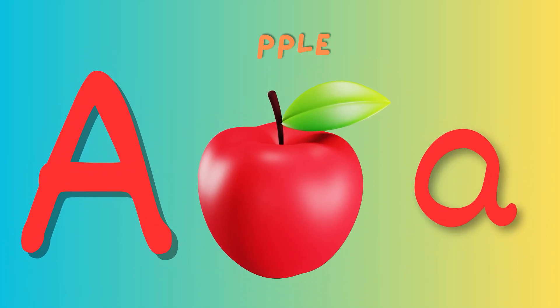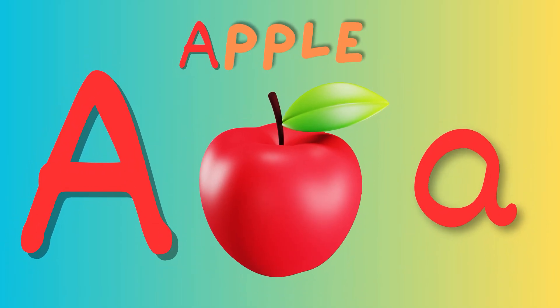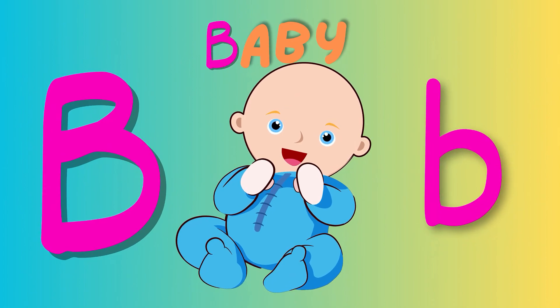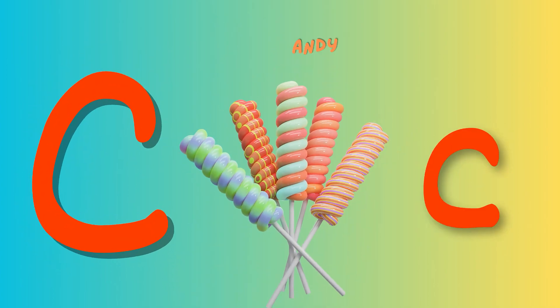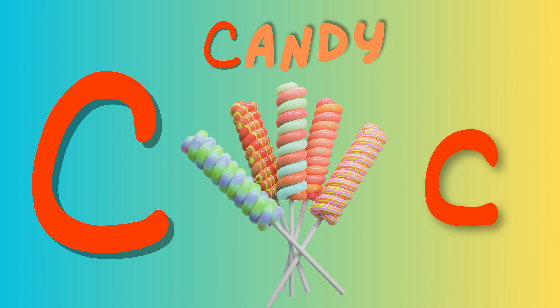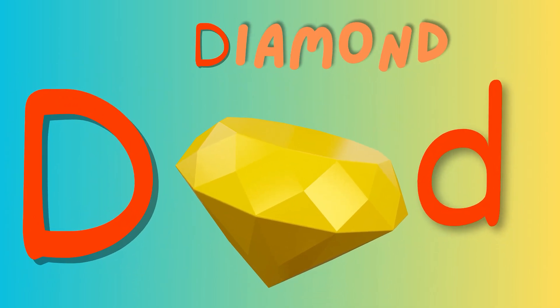A is for Apple. Apple, Apple. This is an Apple. Apple, Apple. B is for Baby. Baby, Baby. This is a Baby. Baby, Baby. C is for Candy. Candy, Candy. This is a Candy. Candy, Candy.